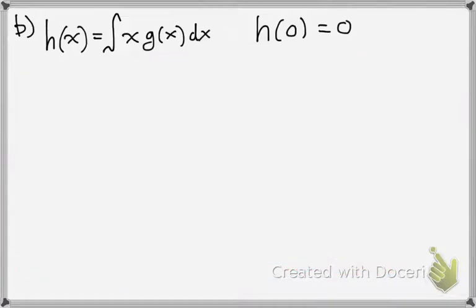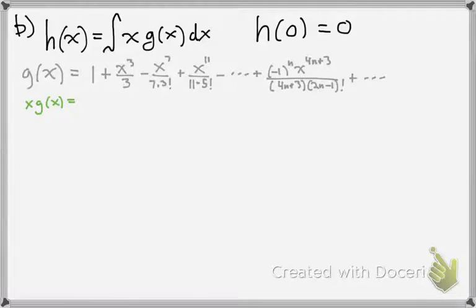Next part is a new function, h(x), which is defined by the integral of x times g(x) dx. And we're also given an initial condition. So let's just write what g(x) is. So that's g(x) from what we got from our previous answer in part a.